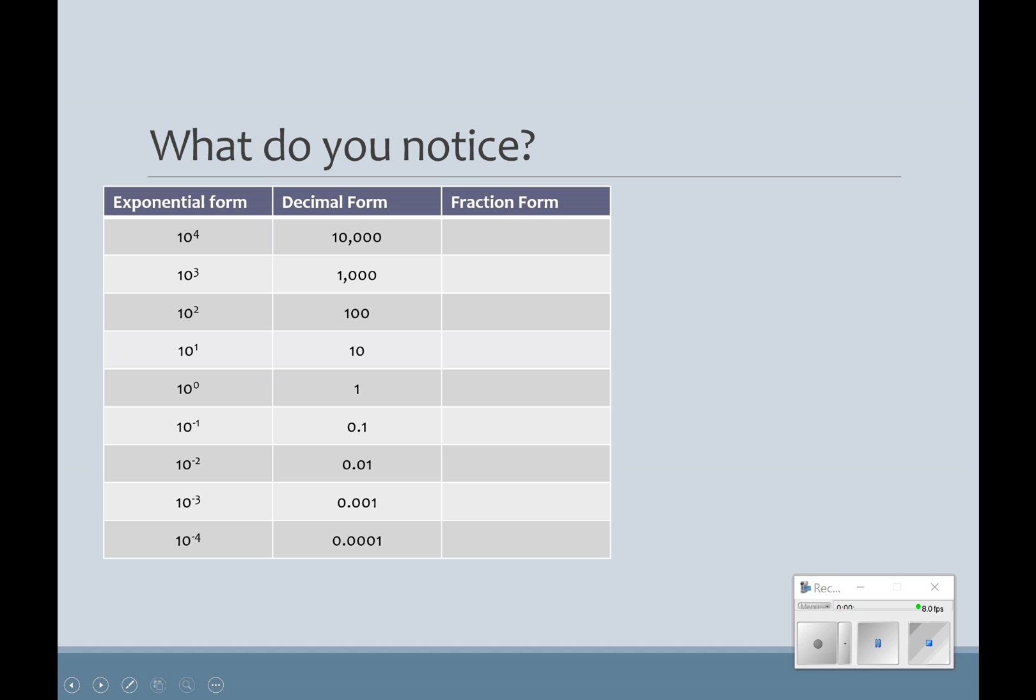Right here I've got powers of ten, and I've written them either in decimal notation. Obviously, we can't write ten thousand as a fraction, or a thousand, or a hundred, or ten, or even one. Actually, we could write them as that over one. So we could write that as ten thousand over one, a thousand over one, a hundred over one, ten over one, one over one.